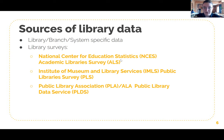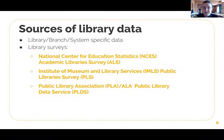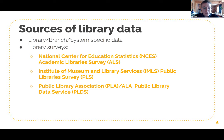There's also the IMLS Public Library Survey and the Public Library Association's Public Library Data Service survey. The IMLS survey is a census of approximately 9,000 public library systems, collected since 1988, accessible using Policy Map. The Public Library Data Service is conducted on behalf of the PLA and also includes data on Canadian libraries, in addition to U.S. institutions.